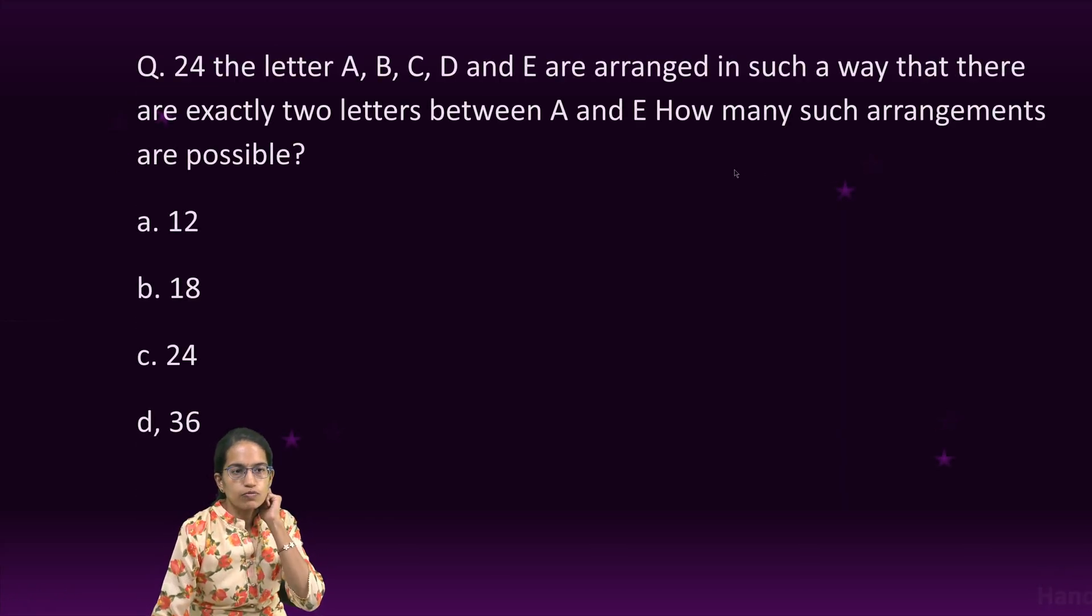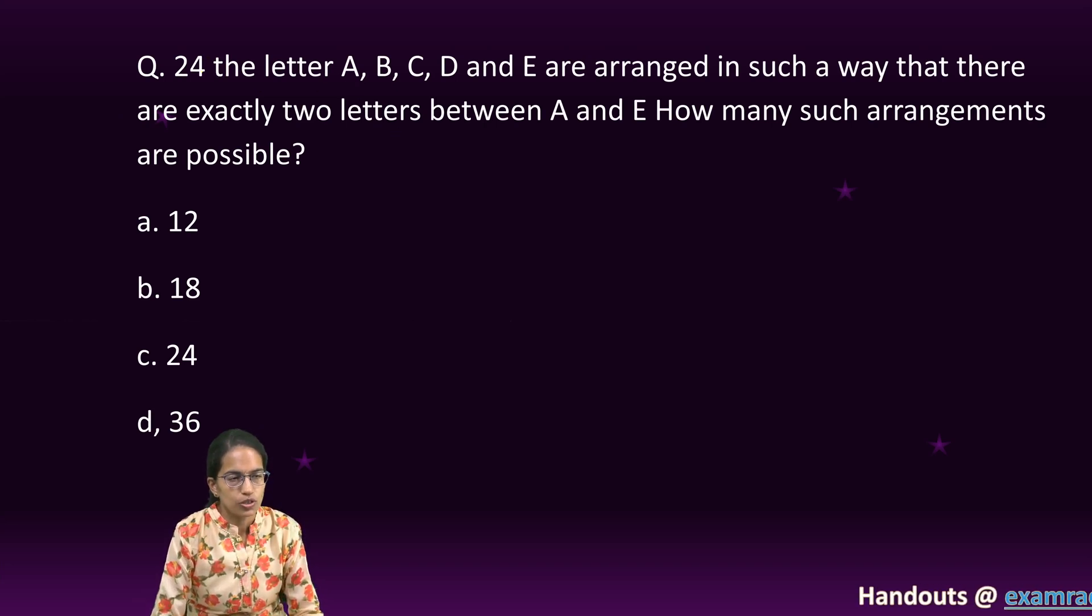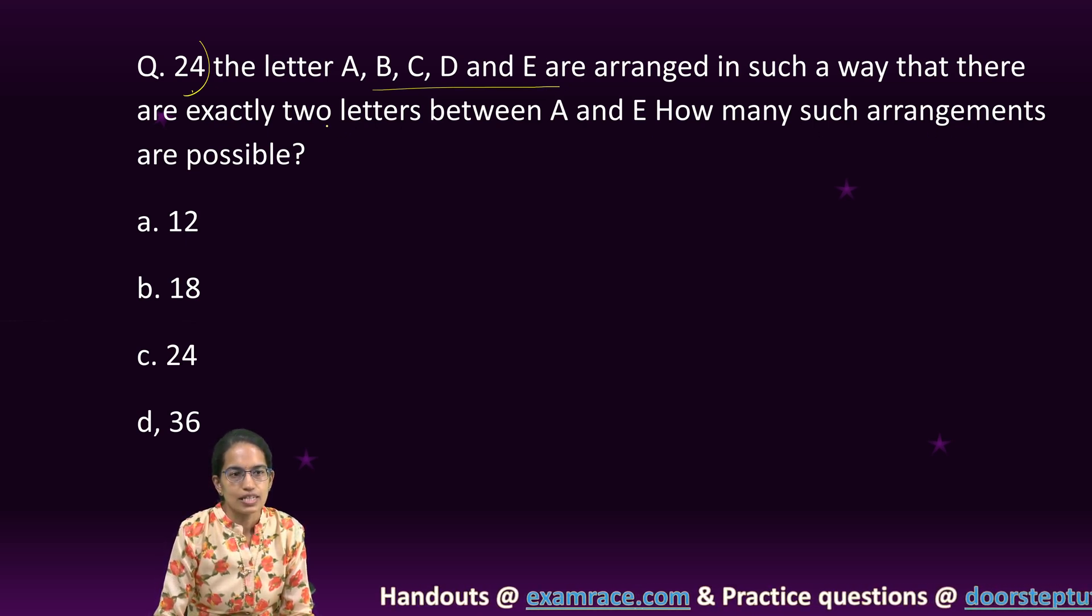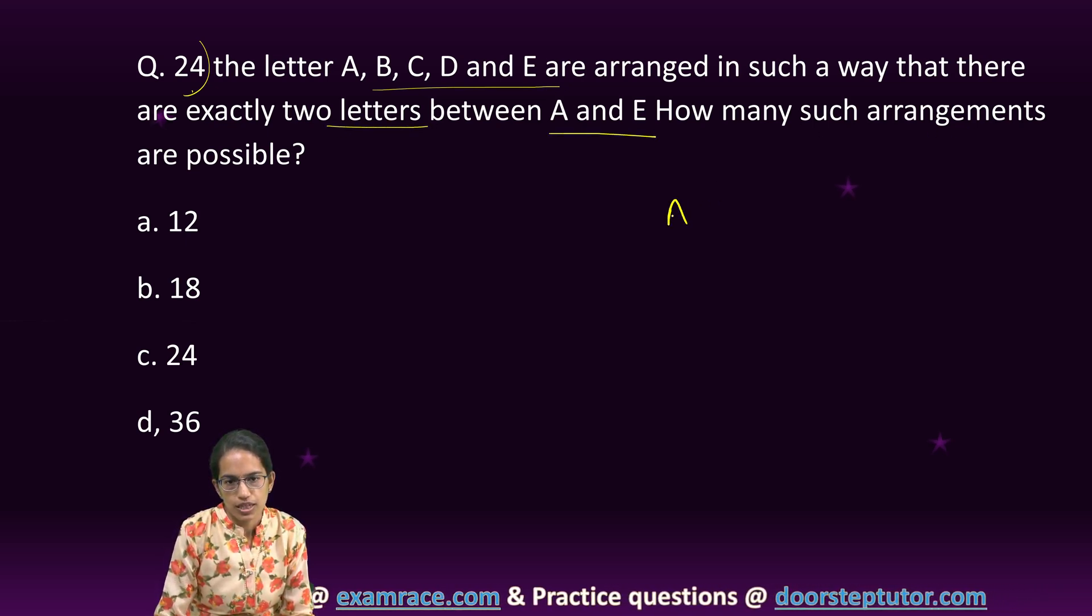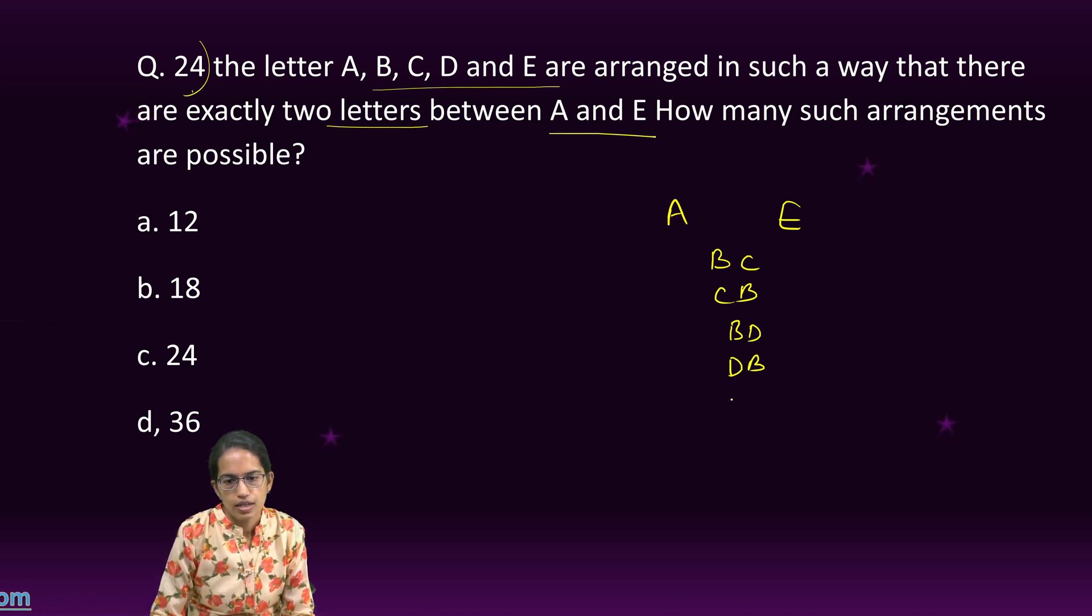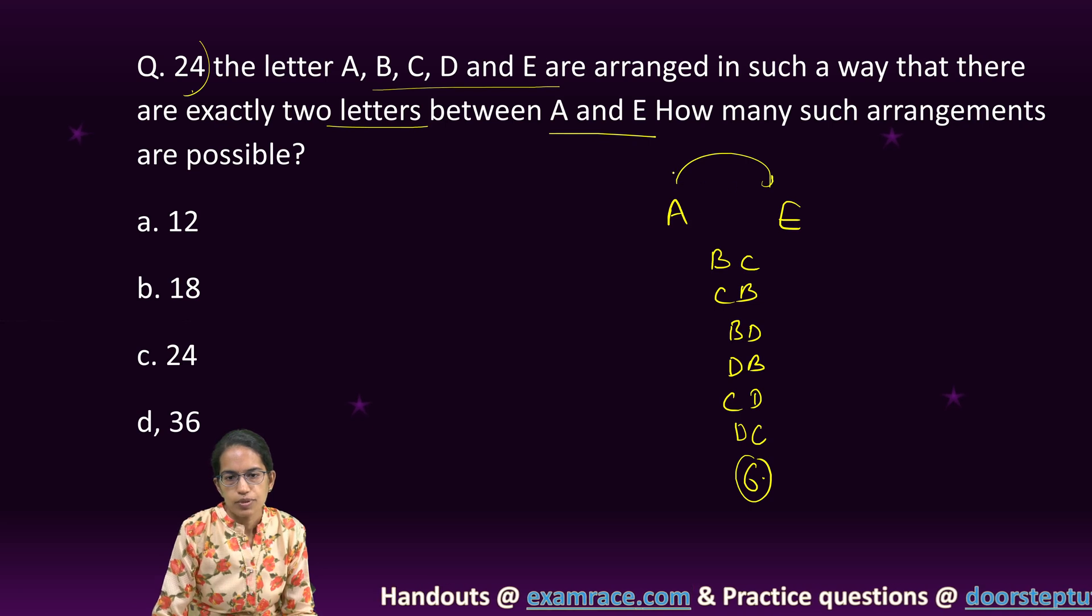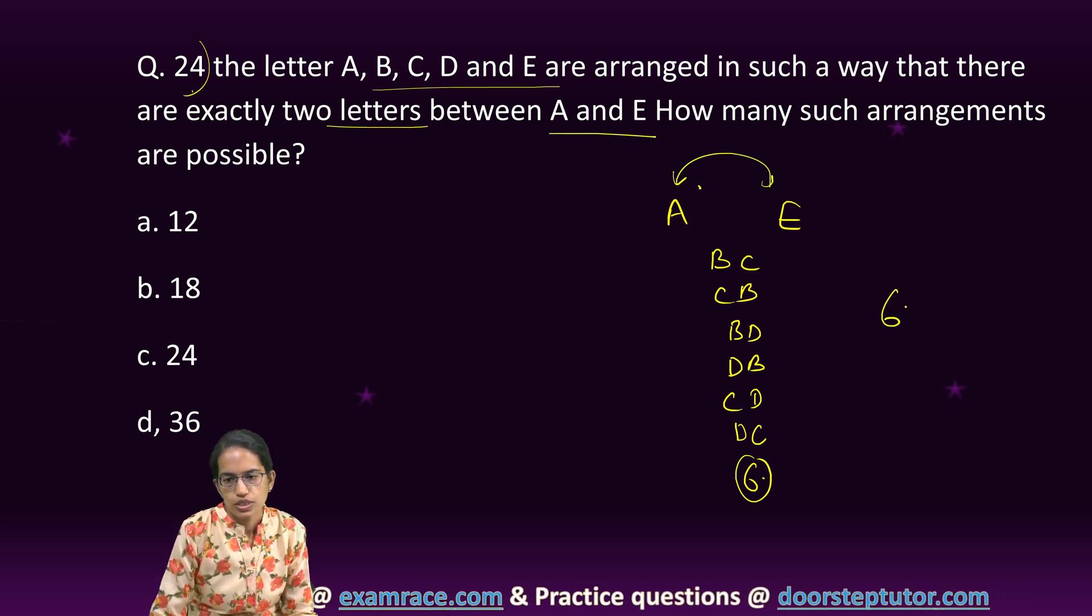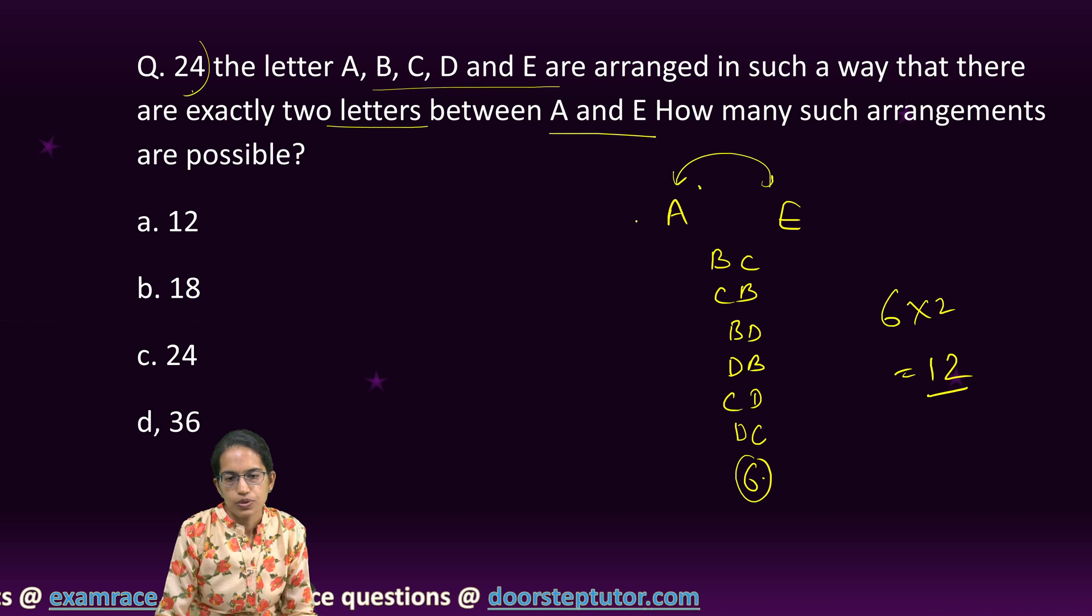The next question focuses on question 24. The letters A, B, C, D, E are arranged such that there are exactly two letters between A and E. So, two letters between A and E, what could be it? B, C, C, B, B, D, D, B and C, D and D, C. Okay, so six combinations here, right?